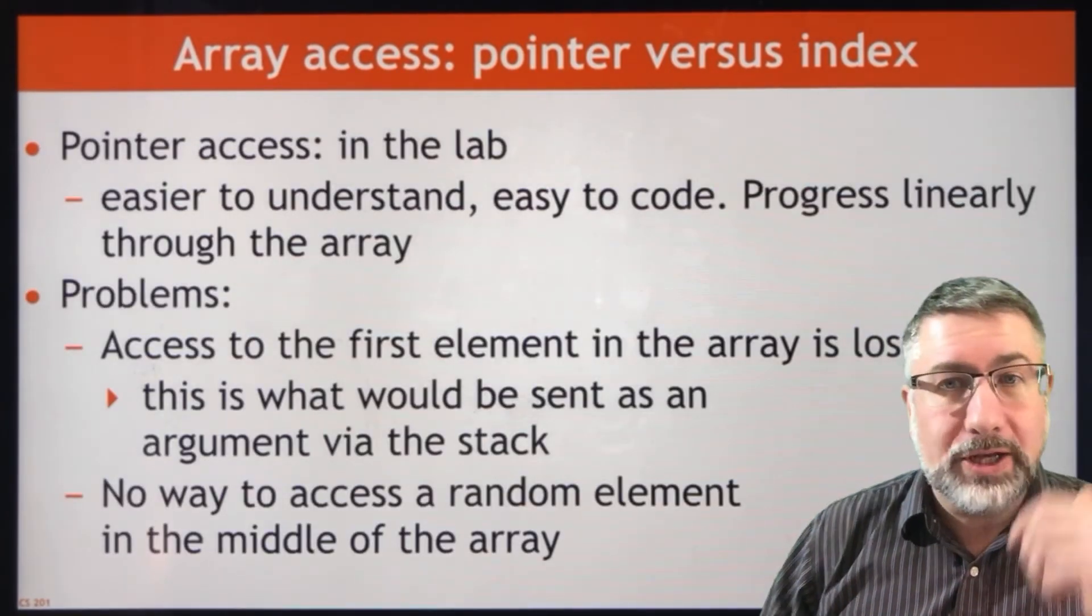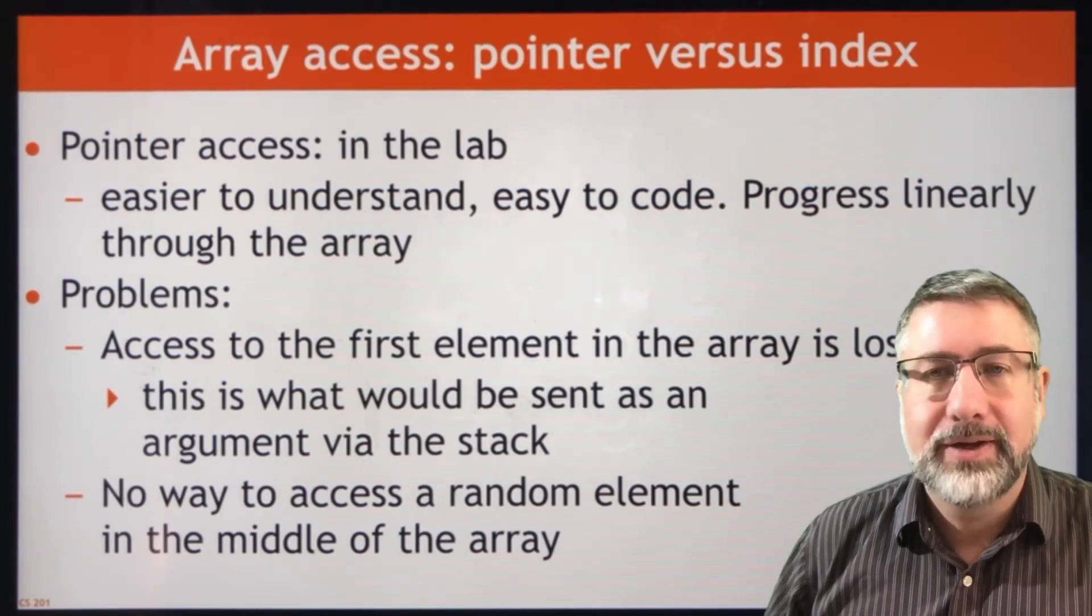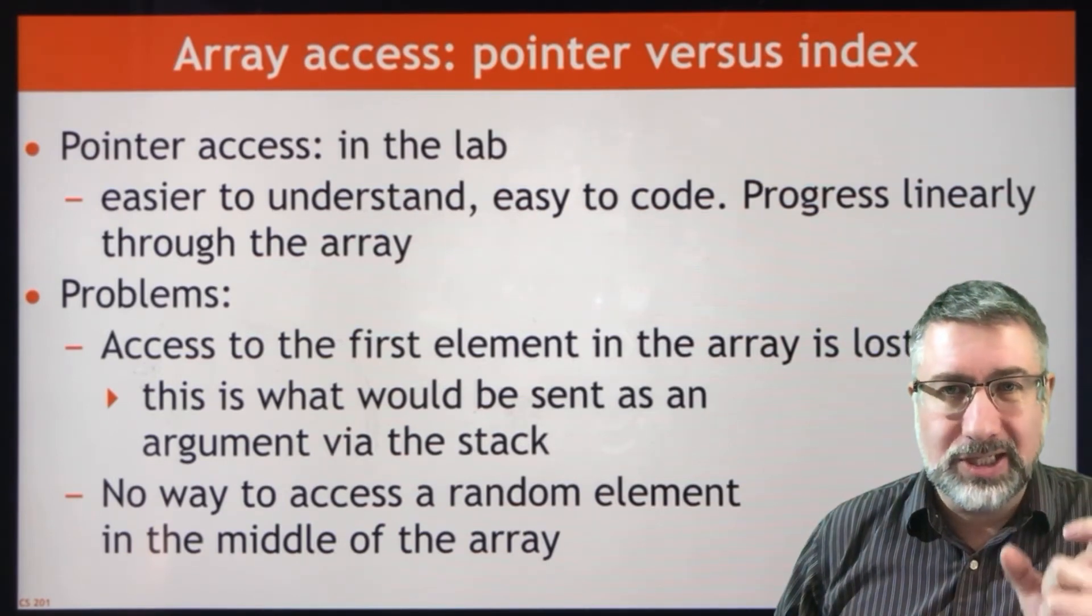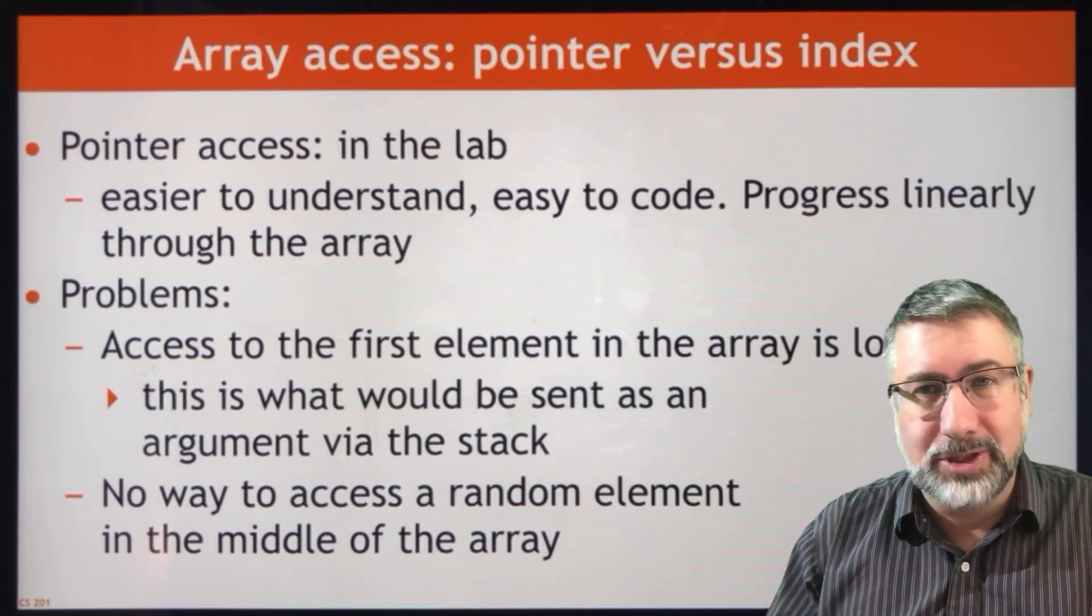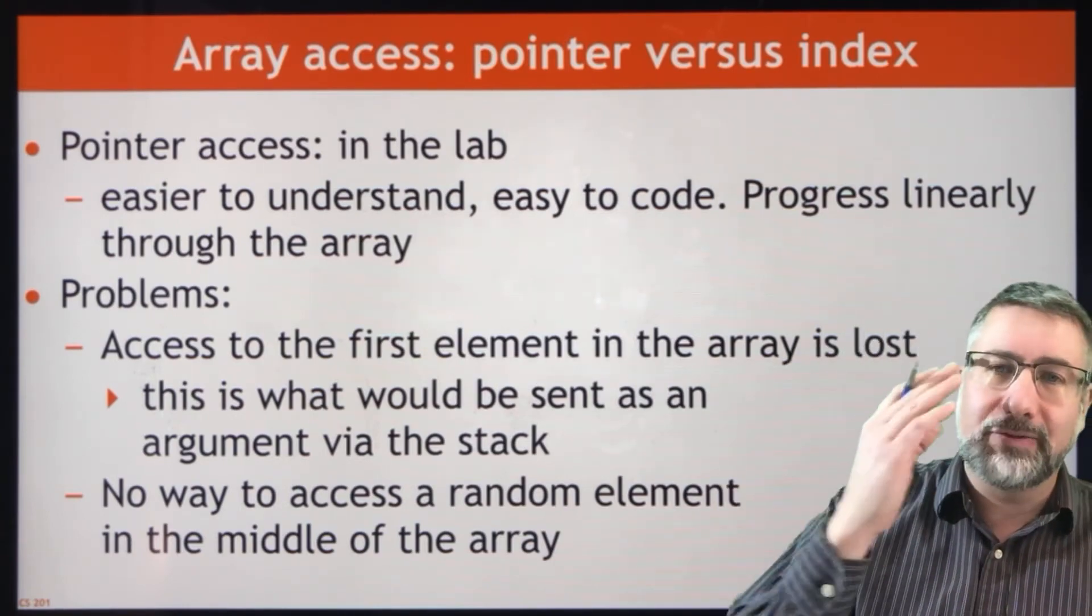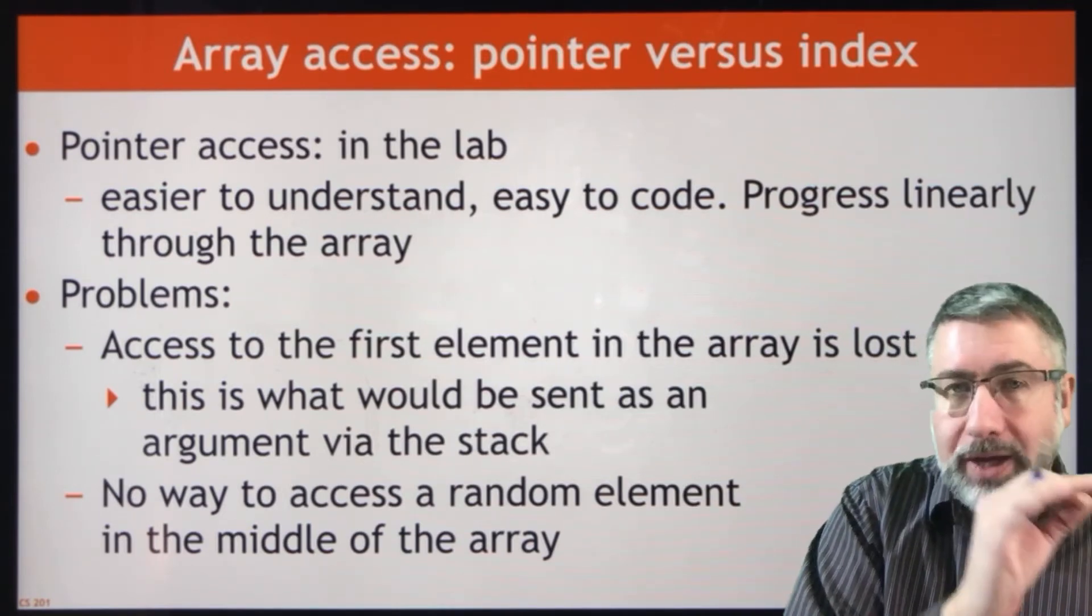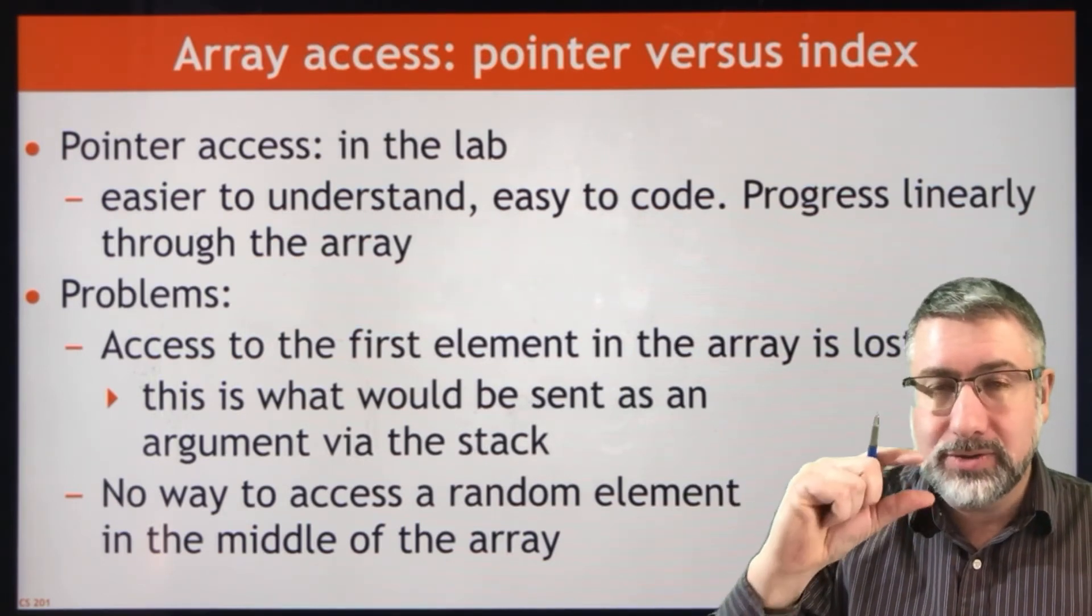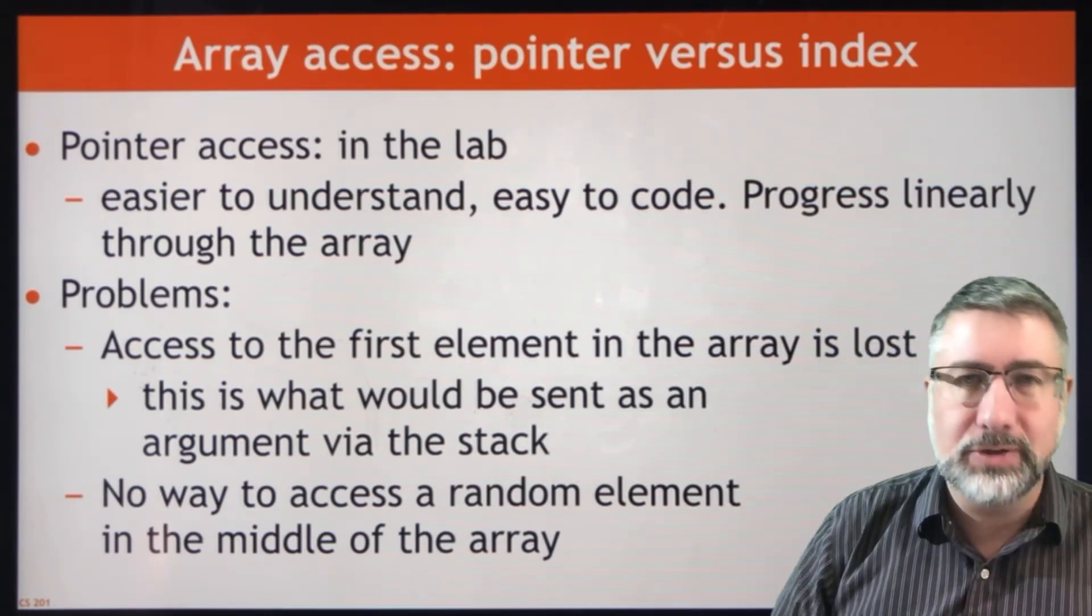So when you are in the lab for this course, you'll walk through the pointer access format of array access. And that just means that we're going to have a register that contains the address of the element we're interested in. And when we're done with it, we're just going to add four to that and go to the next element in the array. It's almost like accessing the elements in a string, which we've already sort of done. We look at the first element in the string, and then the next element, and then the next element. In this case, we're only looking at it one byte at a time, because each character is one byte. If you're looking at it in a word sense, meaning one word at a time, then we're going to do four bytes at a time. So we add four to our pointer each time we go.